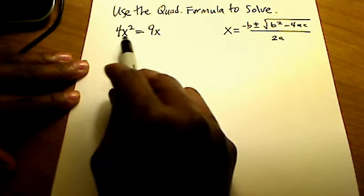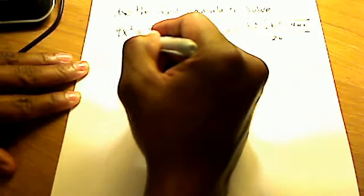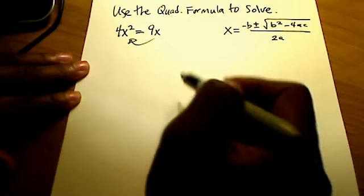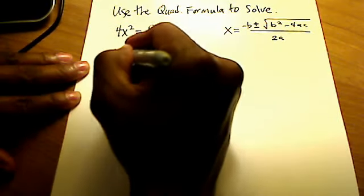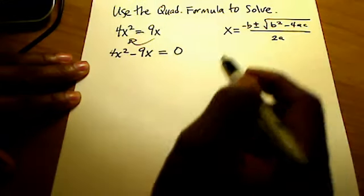But the first thing I'm going to do here is I'm going to bring that 9x that's on the right hand side over to the left hand side along with that 4x squared. So now my equation looks like this, 4x squared minus 9x equals 0.